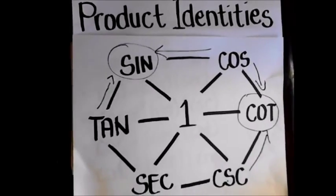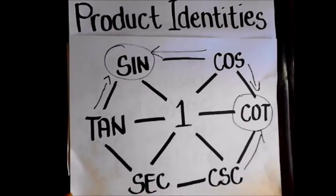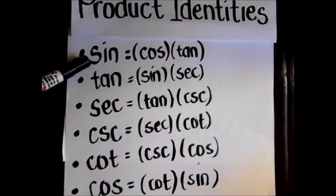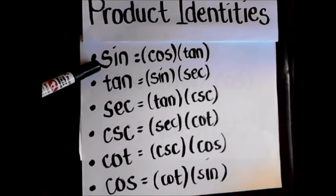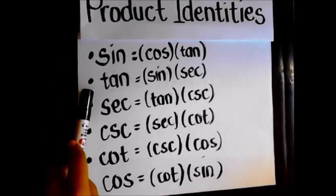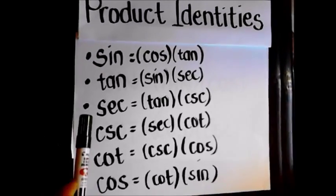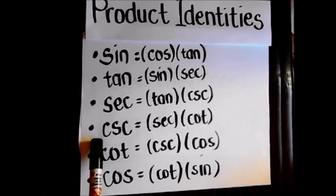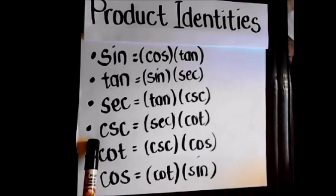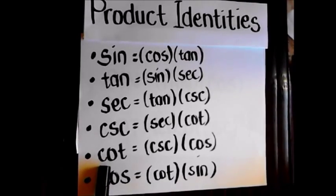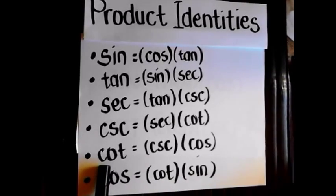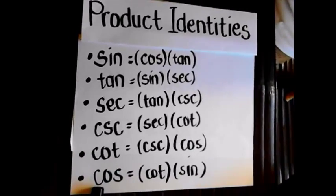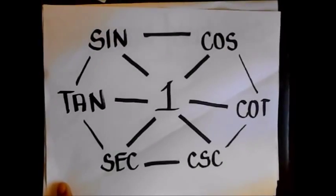Here are all the product identities using the same procedure: sine equals cosine times tangent; tangent equals sine times secant; secant equals tangent times cosecant; cosecant equals secant times cotangent; cotangent equals cosecant times cosine; and cosine equals cotangent times sine.